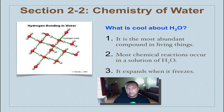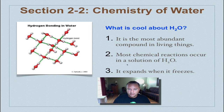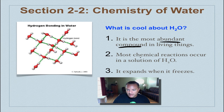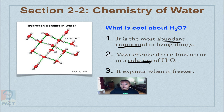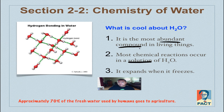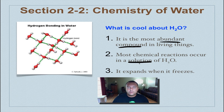Welcome to this episode, the third one from our series on Chapter 2A, which is about the basic chemistry and the chemistry of water. On this episode, we're going to focus on the chemistry of water. We're very familiar with water because water is actually the most abundant compound in living things. Most chemical reactions within a living thing are going to occur within a solution of water, which makes sense because if it's the most abundant compound inside a living thing, then most things are going to occur with water around them.